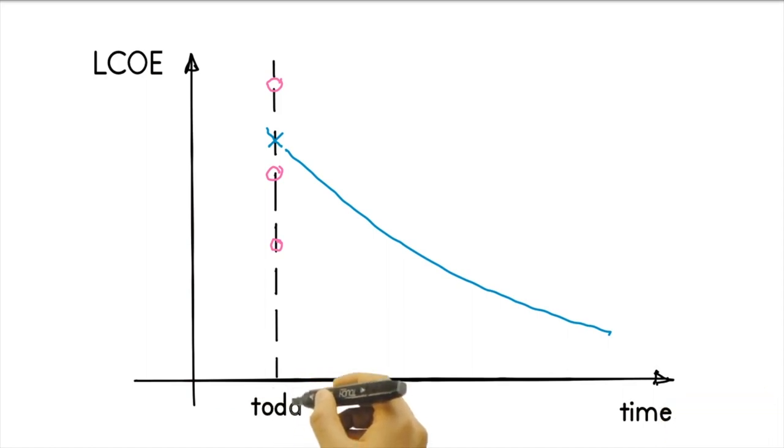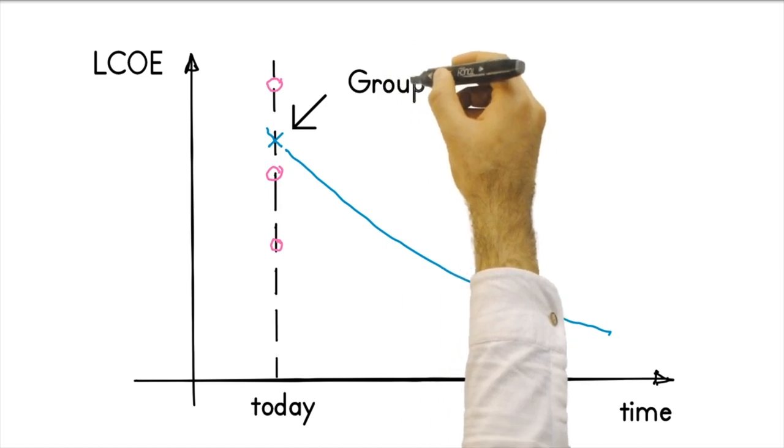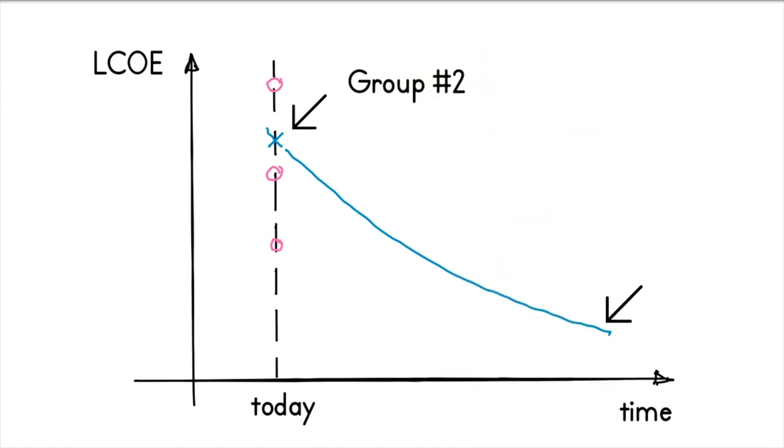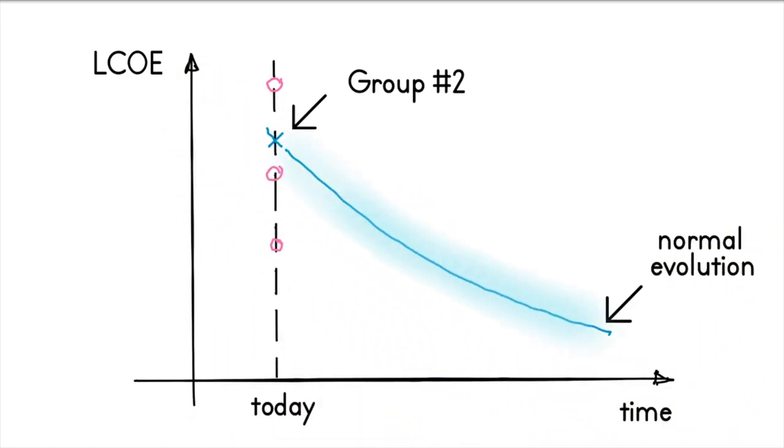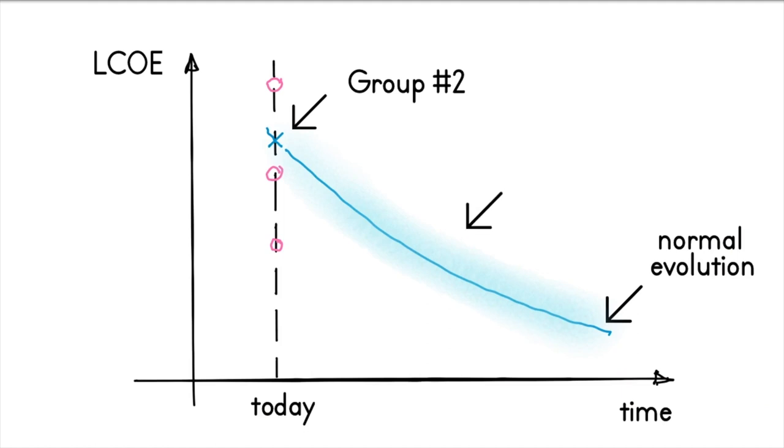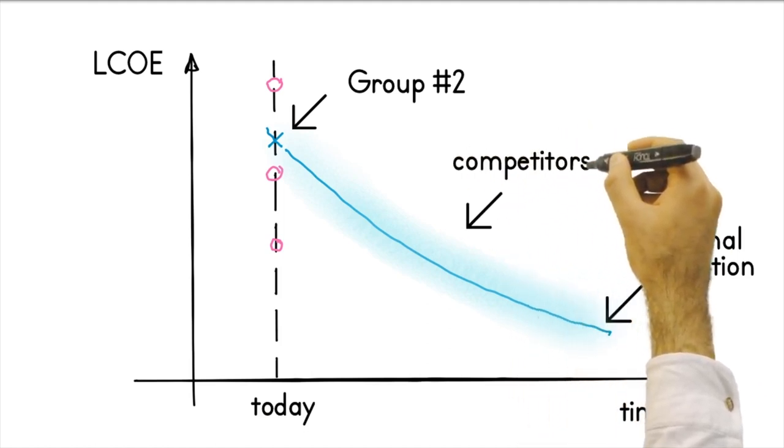Here it will be important to understand if the solutions they have developed allow them to be an outlier and to what extent there are entry barriers that protect them. If the potential for energy cost reduction is only based on the increase in production volumes, we will find ourselves facing a weak case where the possible entry of competitors with a better balance sheet will be a threat.